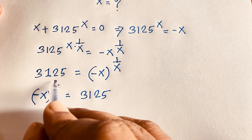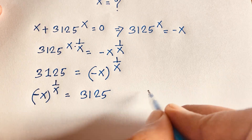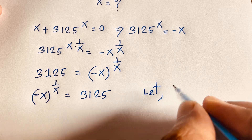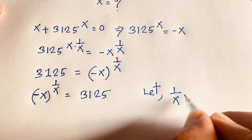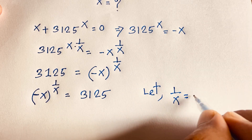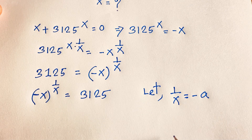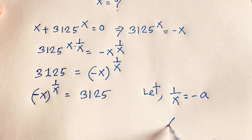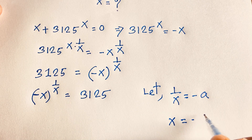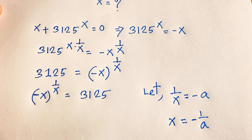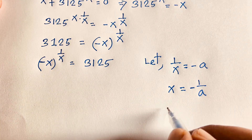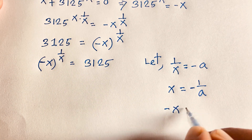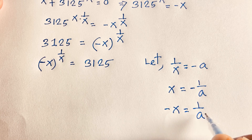Here the exponent is 1 over x. Let 1 over x equal minus x. Then x equals minus 1 over x, and minus x equals 1 over x.